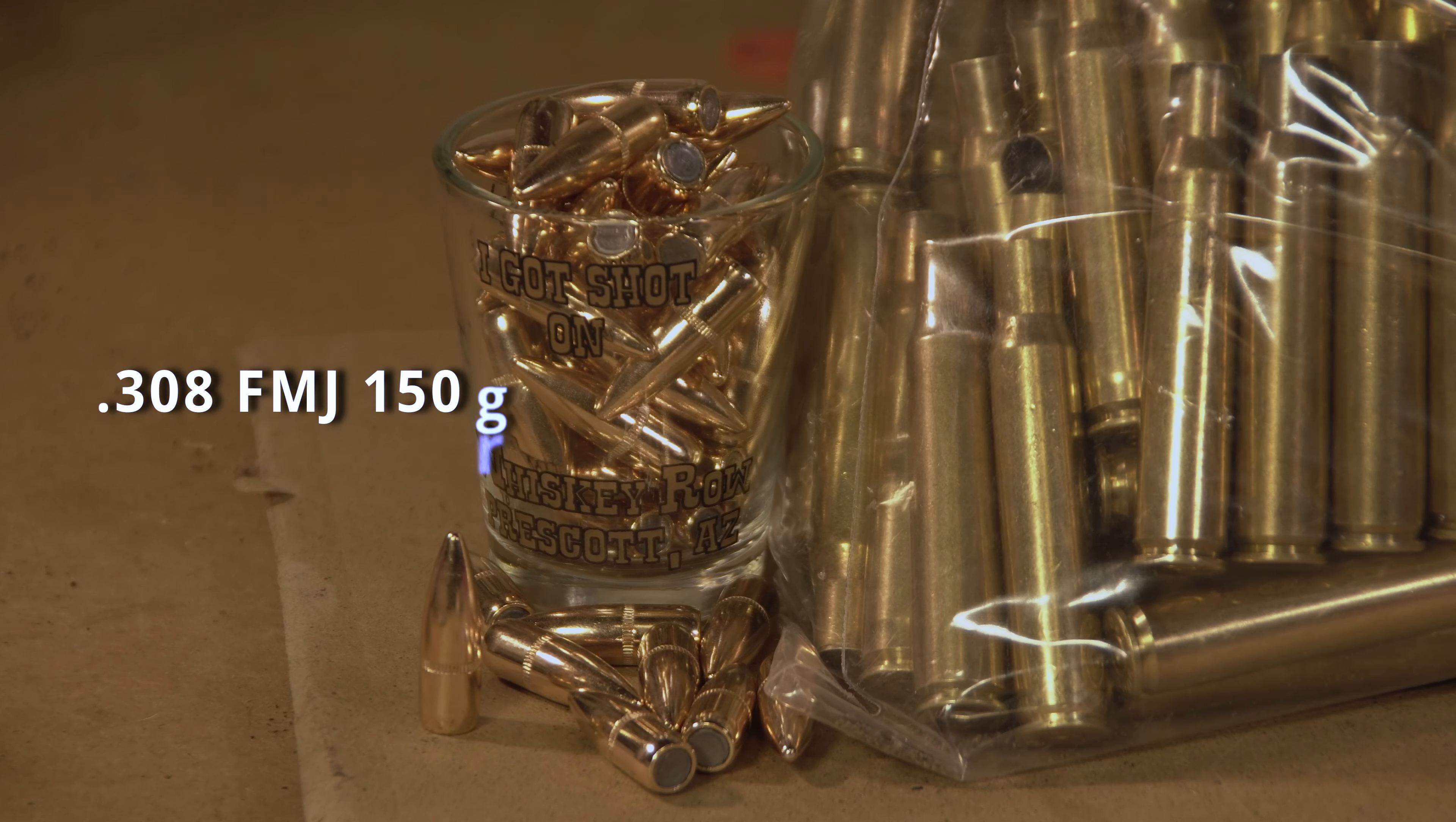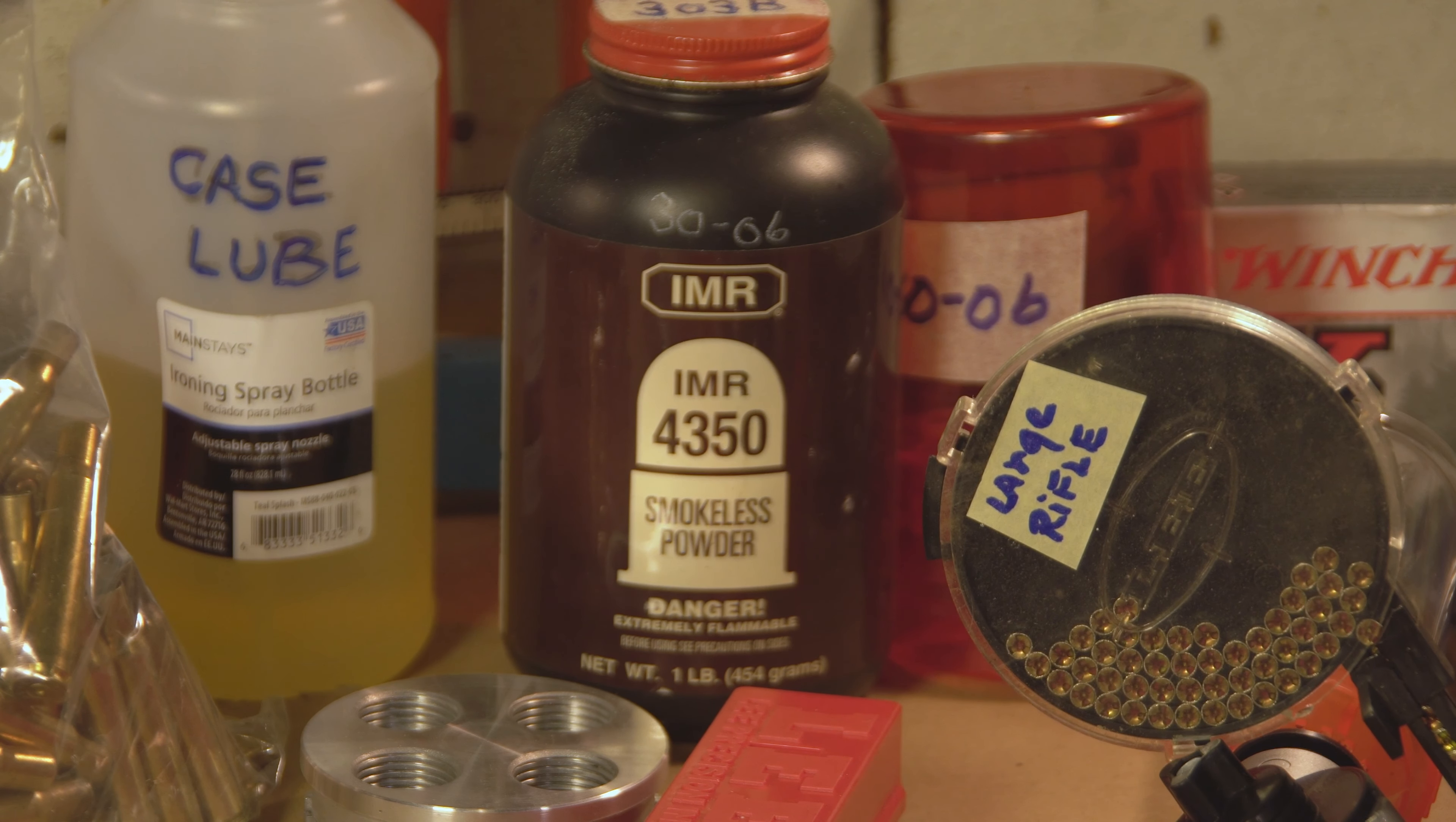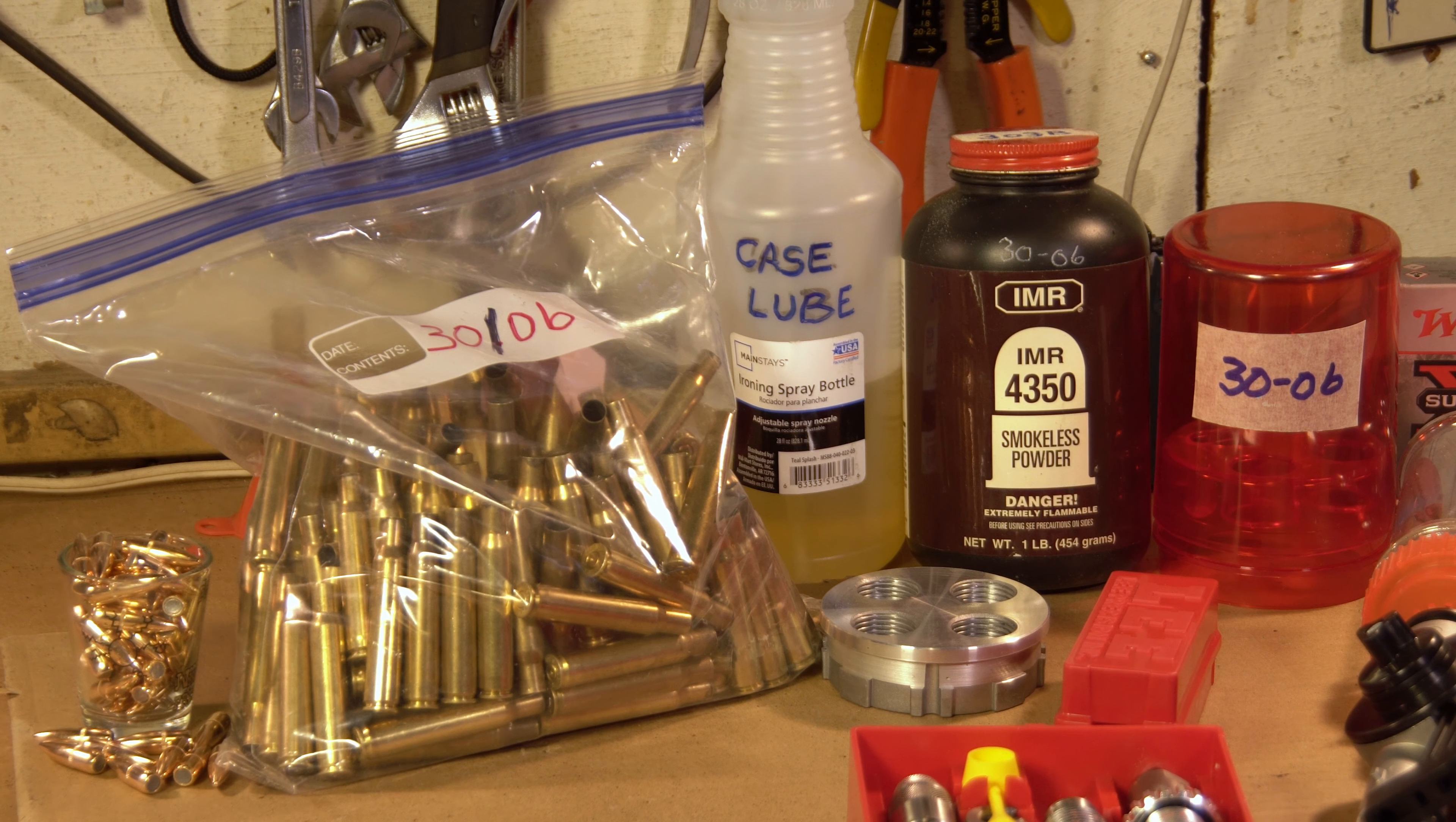We're using .308 Full Metal Jacket 150 grain bullets at about 11 cents each. For powder, we're using IMR 4350 because we had some. An average load of 56 grains per round would cost 27 cents each. And large rifle primers will average 9 cents apiece. Those three items add up to 47 cents per round.